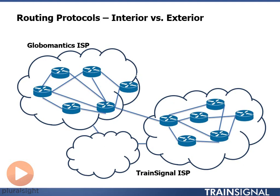Let's say we're a business that needs a highly available network — meaning we have a public website and we always want our website to be up. In order to do that, we want connections to two different internet service providers. In this case, I purchased services with both the TrainSignal ISP and the GlobalMantics ISP.